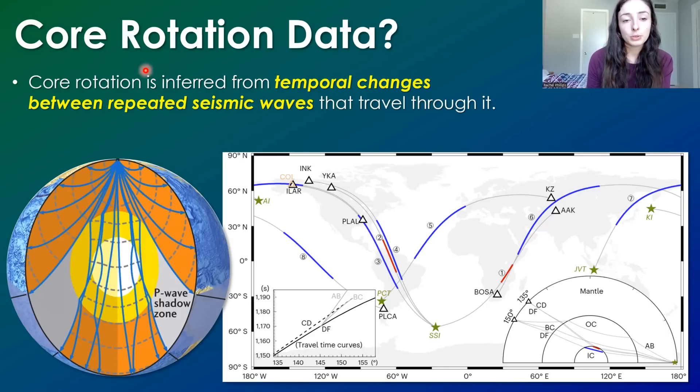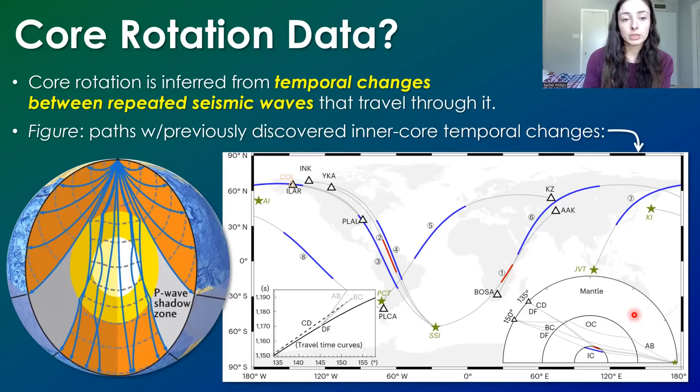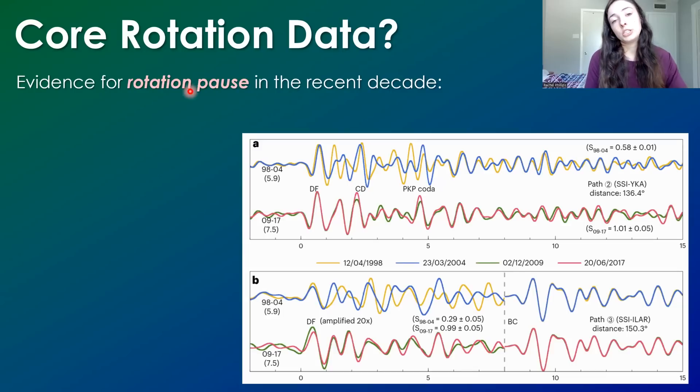So in general, the inner core's rotation is inferred from temporal changes between repeated seismic waves that travel through it. This figure here is from the most recent paper, which is showing the paths of seismic waves through the inner core that have previously shown temporal changes that suggest differential rotation of the inner core. So again, differential rotation in the inner core is something that's been suggested throughout the past few decades from seismic wave data.